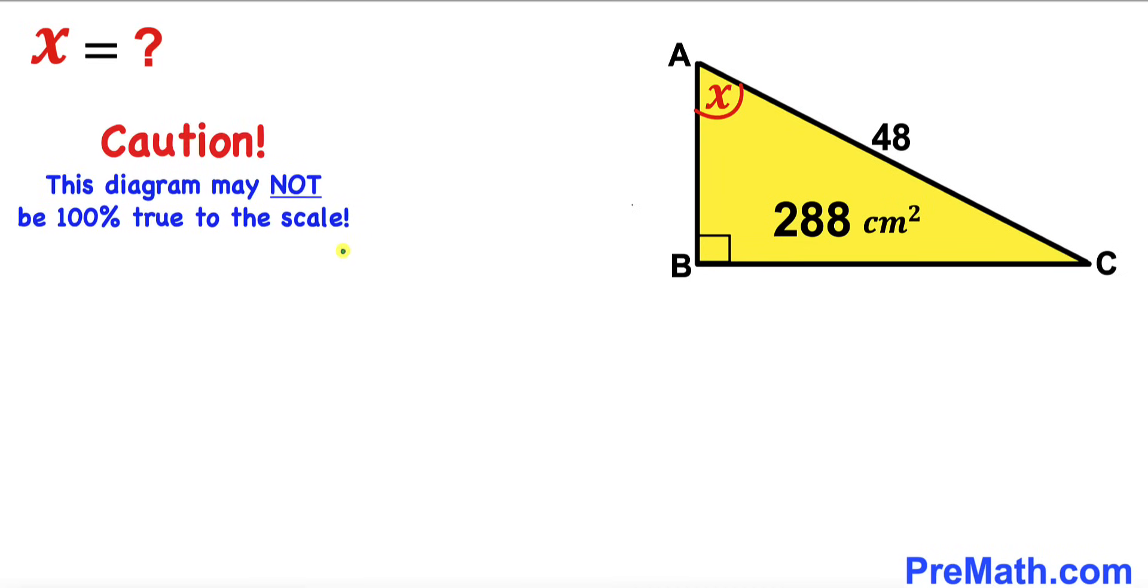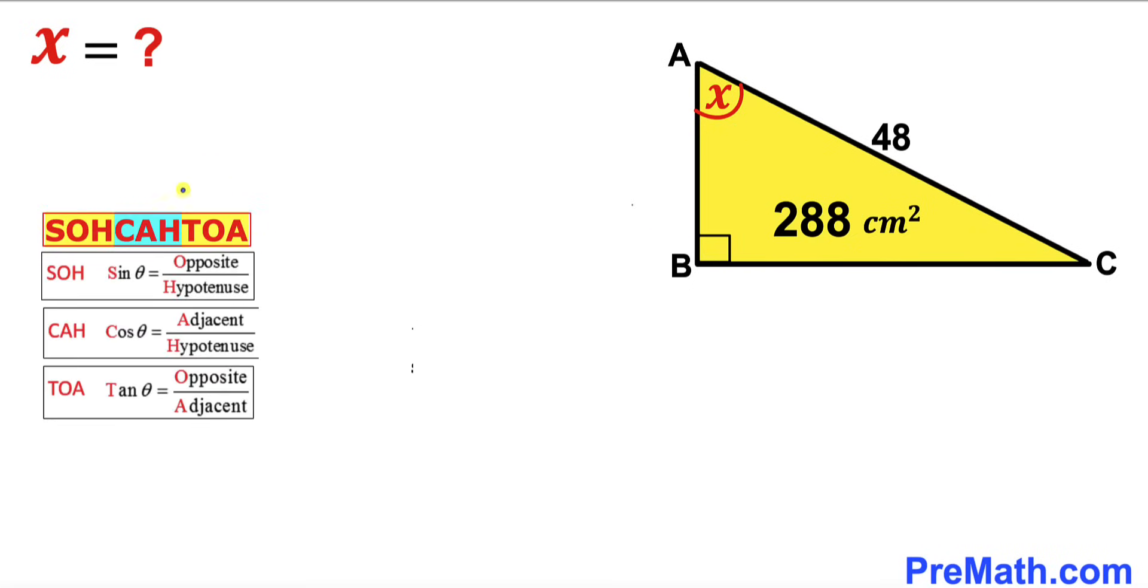We want to find the value of this angle X and we're dealing with this right triangle ABC. Let's recall SOHCAHTOA. We're interested in cosine of theta equals adjacent divided by hypotenuse. In our case, side length AB is our adjacent and side AC is our hypotenuse.